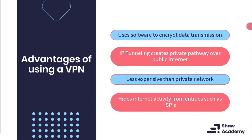A VPN also allows you to hide all your activity over the public internet, including from your internet service provider. A lot of people tend to use VPNs for this exact reason — to remain anonymous. Apart from this, VPNs can actually be used to change your apparent location so that you can access content on services like Netflix that would otherwise not be available in your region.